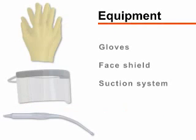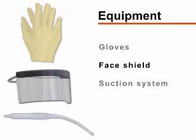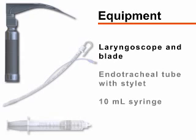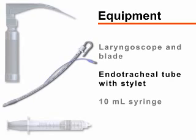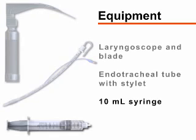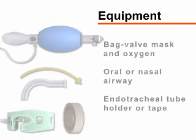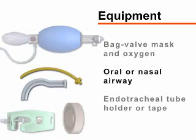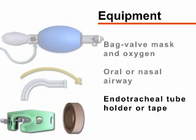Begin by gathering the required equipment. You will need gloves, a protective face shield, and a working suction system, a laryngoscope with appropriate blade, an endotracheal tube with stylet, and a 10 milliliter syringe. You will also need a bag valve mask attached to oxygen, an oral or nasal airway, and tape or an endotracheal tube holder.